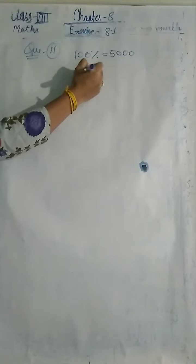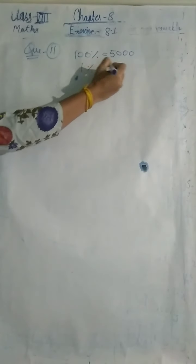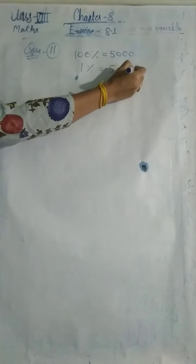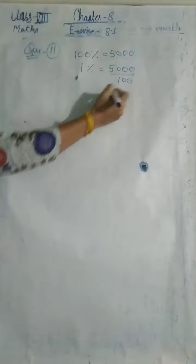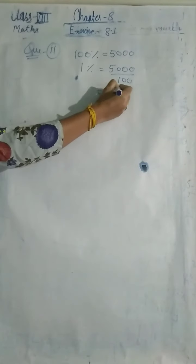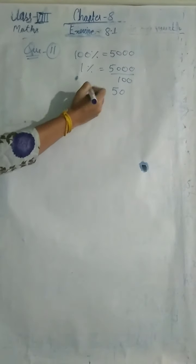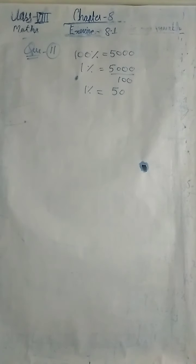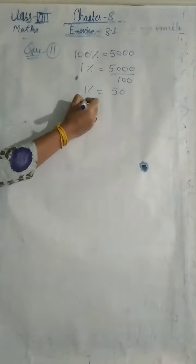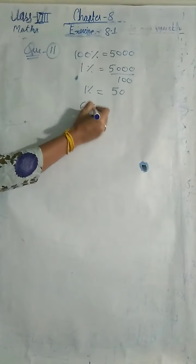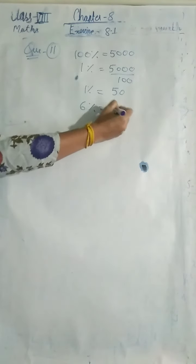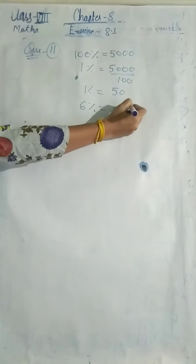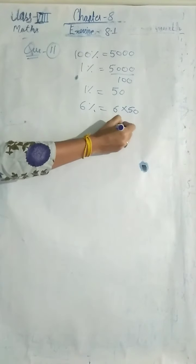To find 6% of 5000: first find 1% which is 5000 divided by 100, that gives 50. Then 6% is 6 multiplied by 50, which equals 300.